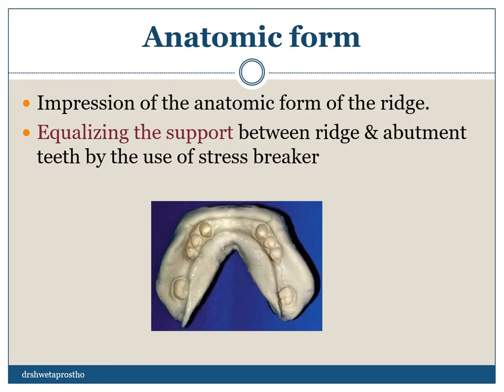Anatomic form of the impression means one impression — one impression for the ridge and the tissue — recording the anatomic form of the ridge with no separate impression for the mucosa. This is sufficient for Class III or tooth-bounded cases. But for distal extension RPDs, we need to record the mucosa separately, or if we use this technique, we need to equalize the support between the ridge and the abutment teeth by the use of stress breakers.